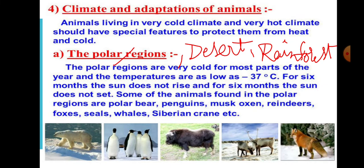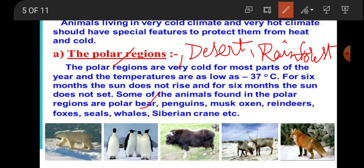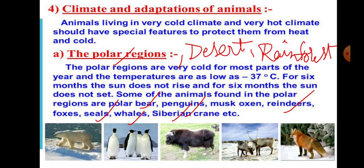The polar region has extremely cold climates, the desert region has extremely hot climates, and the rainforest region has plenty of rainfall and average temperatures — it is the major region with the most living organisms. The polar region immediately brings to mind heavy snowfall and very low temperatures, down to minus 37 degrees Celsius or less. For six months there is no sunrise at all, and for six months there is no sunset. Animals living in the polar region include polar bears, penguins, reindeer, whales, seals, and Siberian cranes.